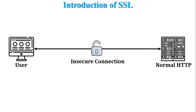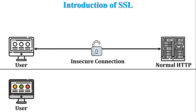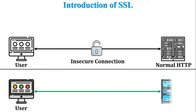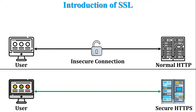So the question is: how can we make an insecure connection a secure connection? For example, if the server uses secure HTTPS instead of normal HTTP, the connection becomes secure. HTTPS means normal HTTP protocol is used with the SSL certificate.